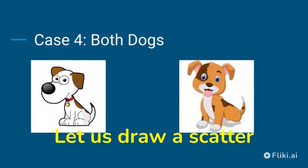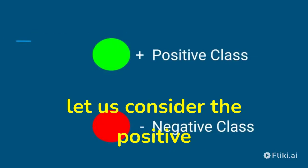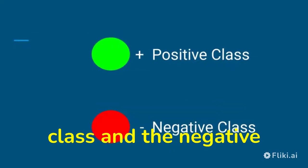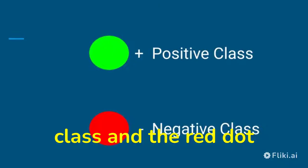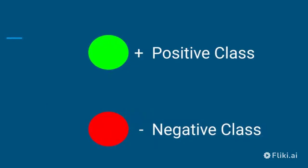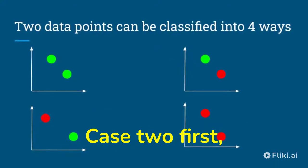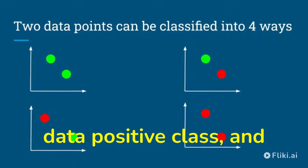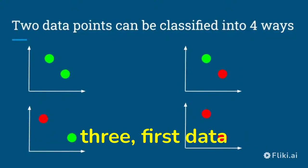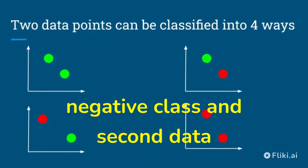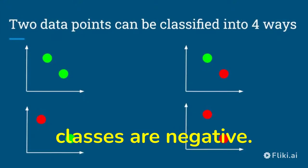Let us draw a scatter plot. Instead of cat and dog, let us consider the positive class and the negative class. Let the green dot represent the positive class and the red dot represent the negative class. Case one: both classes are positive. Case two: first data is positive class and second is negative class. Case three: first data is negative class and second data is positive class. Case four: both classes are negative.